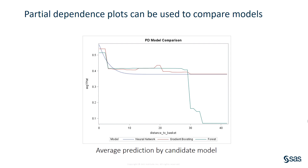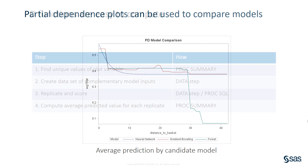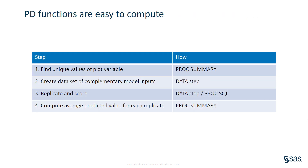It's worth noting that PD plots are model agnostic — that is, you can use them with any predictive modeling algorithm that produces a scoring function. Another advantage is that PD functions are easy to compute. You just need to find the unique values of the plot variable, create a data set of complementary model inputs, replicate and score the training data, and compute the average predicted value by replicate. You can perform these steps using base SAS functionality.